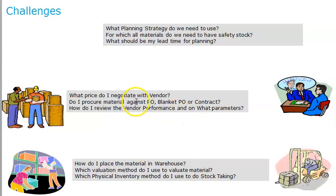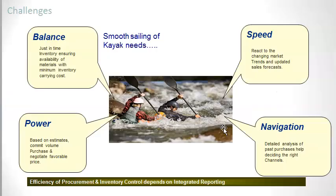A PO is a single generation — it is generated once. A blanket PO is something which will be done multiple number of times. And a contract is something which we do for a long term and on a regular basis. How do I place the materials in the warehouse once we procure the material? Which evaluation method do I use to evaluate materials? Which physical inventory method do I use for stock-taking? These are the challenges that we have.